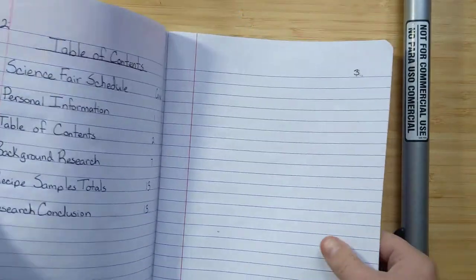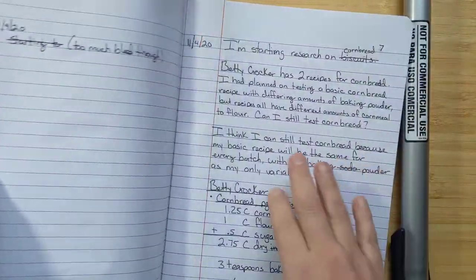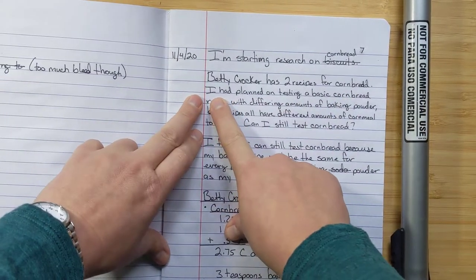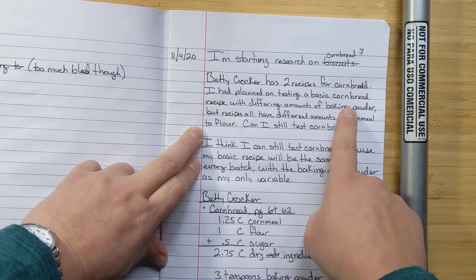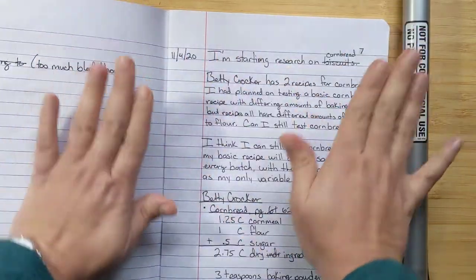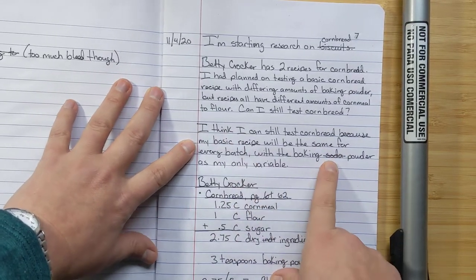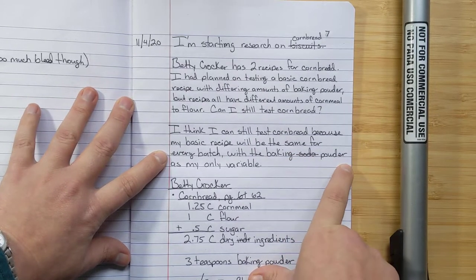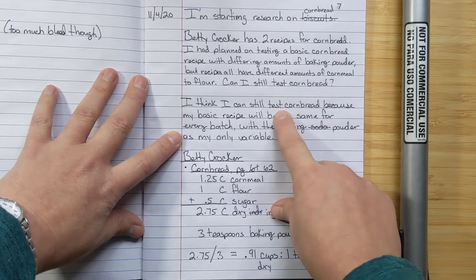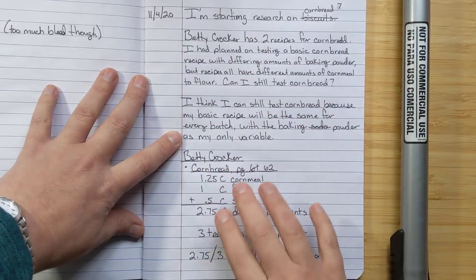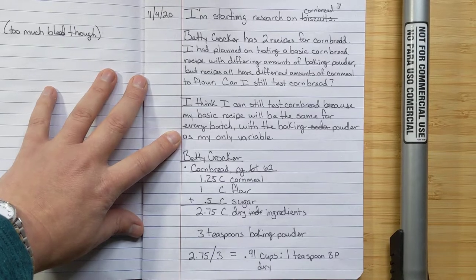So this is page seven and I'm starting my background research. So I came here to my table of contents and I put background research page seven and I literally just started writing Betty Crocker has two recipes for cornbread. And then I hit a snag. I had planned on testing basic cornbread recipe with differing amounts of baking powder, but the recipes all have different amounts of cornmeal to flour. Can I still test cornbread? So I had a problem. And instead of thinking of it on the side before I wrote anything and making sure it was all going to be perfect, I went ahead and wrote in my problem. Then I went away and thought about it and I came back. I think I can still test cornbread because my basic recipe will be the same for every batch with the baking powder is going to be my only variable. So for my background research, I decided it doesn't matter if I'm only looking at cornbread or if they all have different amounts of cornbread plus flour, or if I'm looking at muffins, I decided for my background research, it was still going to apply. So I literally just wrote all that in here so that the judges, when they come to look at my board can see that I had that thought and I solved that problem and I moved on.